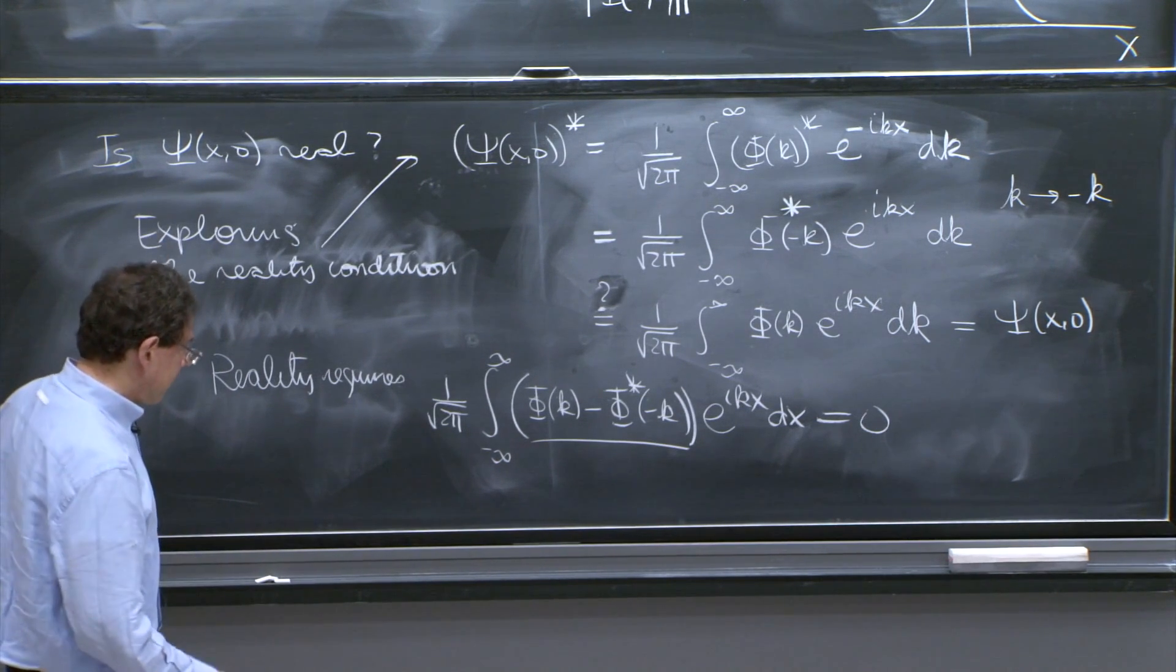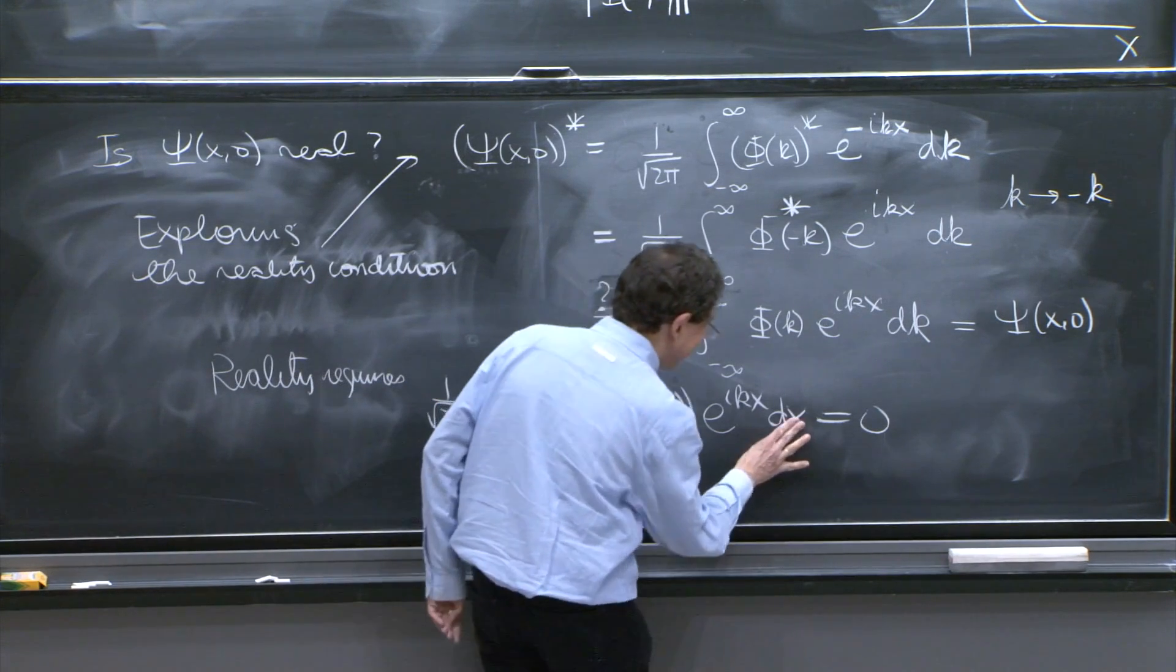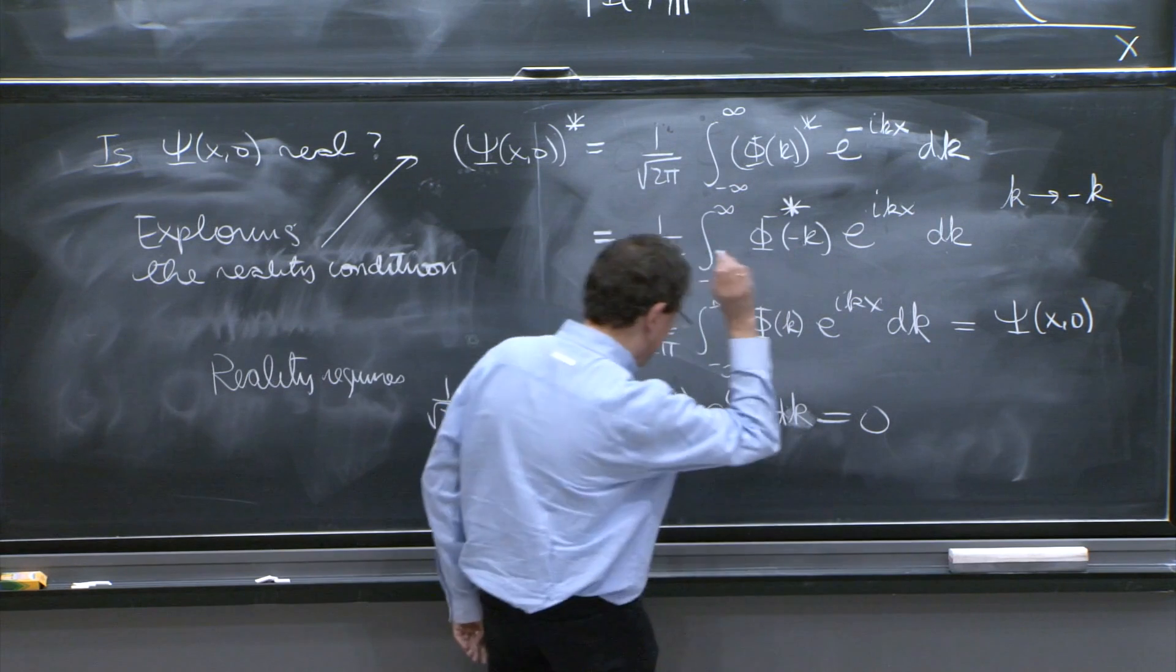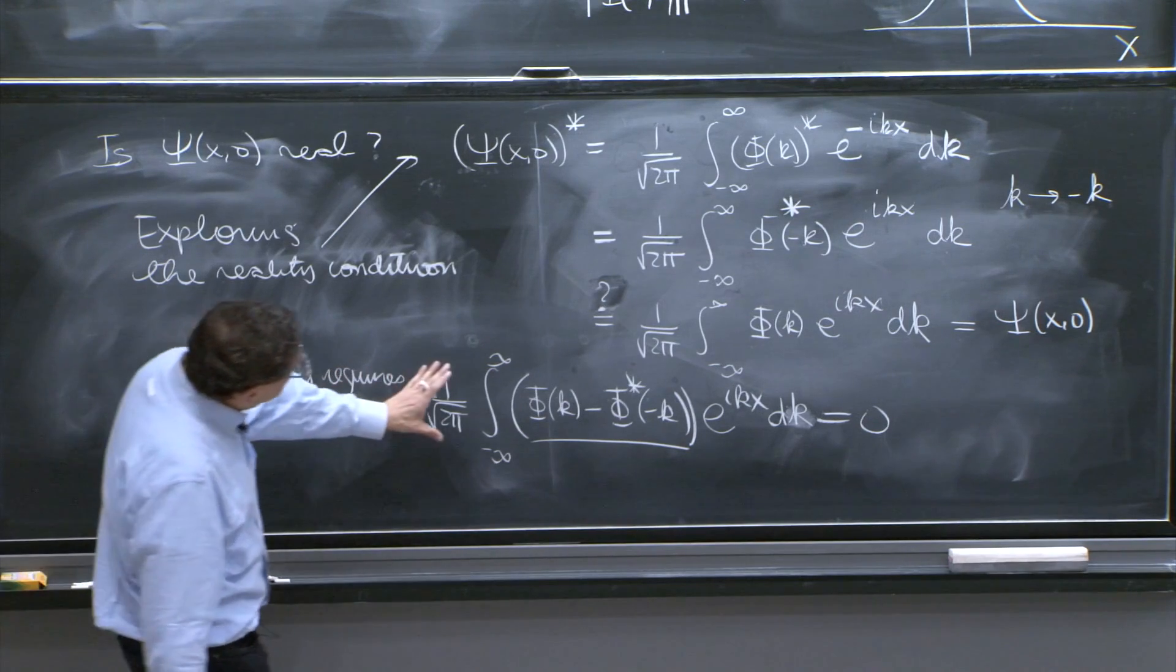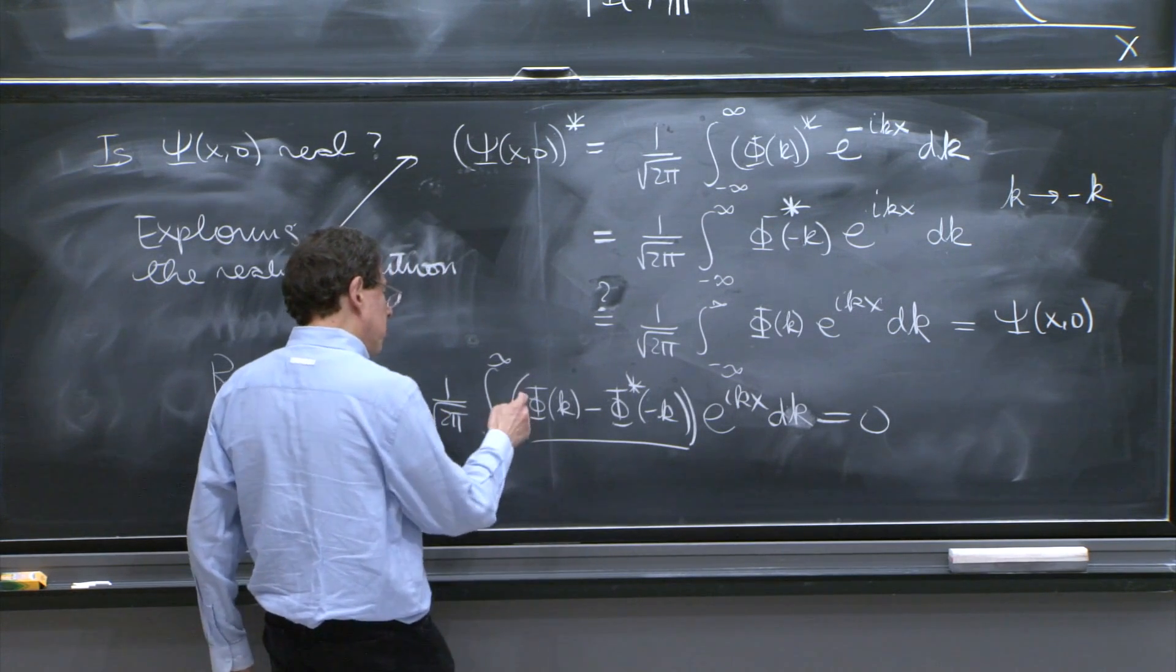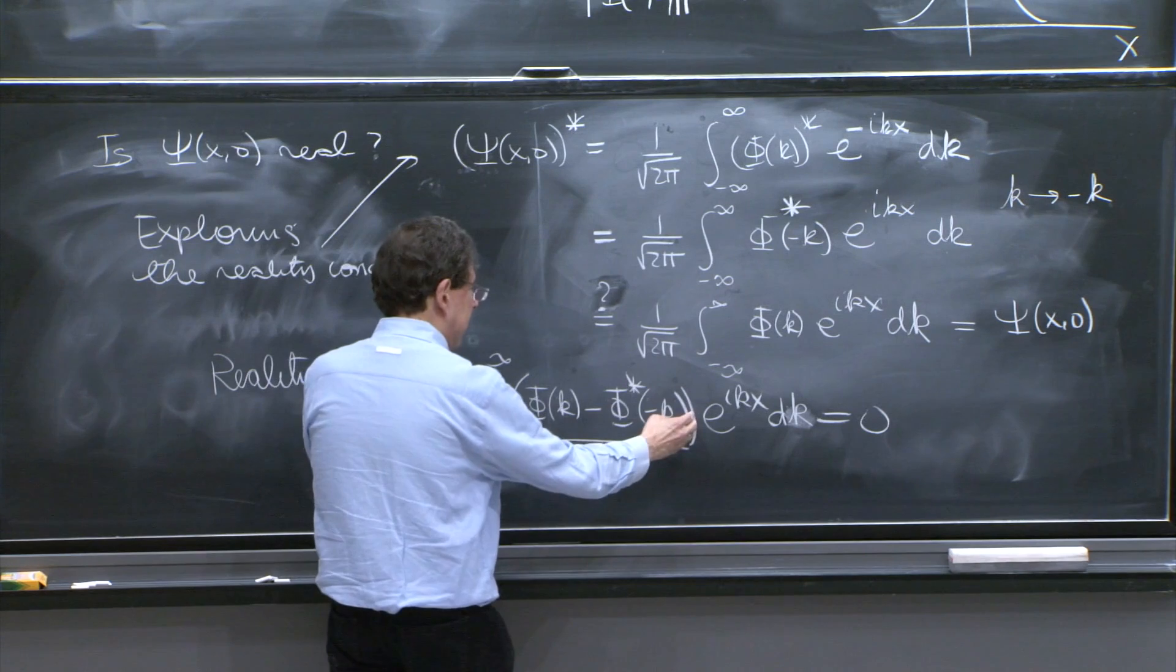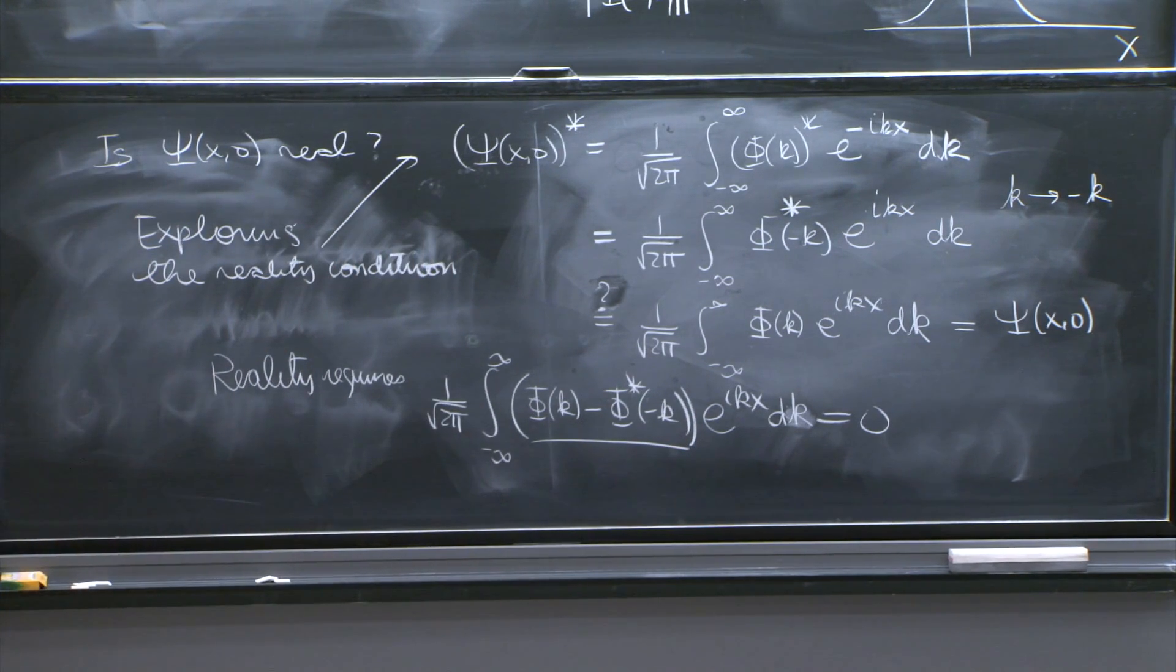Actually, shouldn't that be dk and not dx? Yes. Thank you. So this property that this whole integral be equal to 0, you were tempted to conclude that it means that this thing is equal to 0. And that is correct.